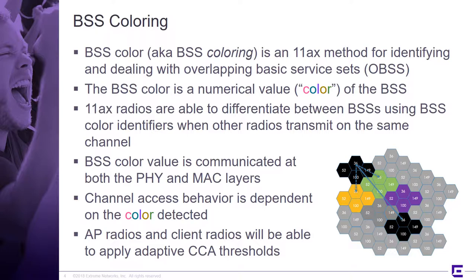The BSS color values are communicated at both the physical and MAC layers — it's in the physical header and in the MAC header of certain frames. The channel access behavior is going to be dependent on the color detected. If you detect something with your own color on your channel, that's interference. If you detect something with a different color, that would not normally be considered interference. There are some thresholds involved, but in all likelihood it would not be.